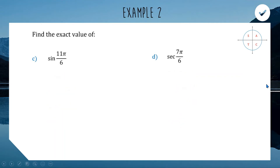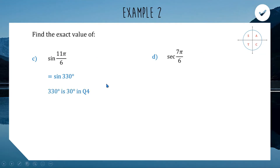Next: sin(11π/6). π/6 is 30 degrees, times 11 gives 330 degrees. That puts us in quadrant 4, 30 degrees back from 360. In quadrant 4, sine is negative. So sin(330) = −sin(30) = −1/2.